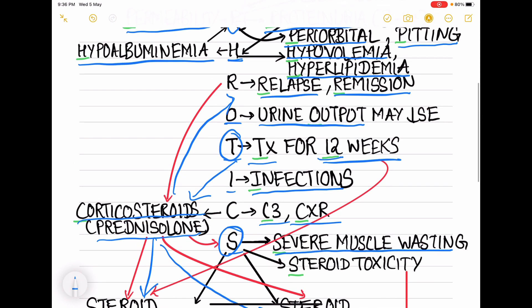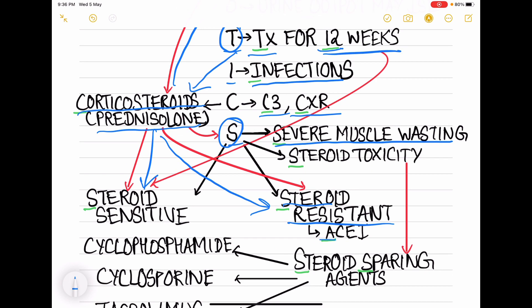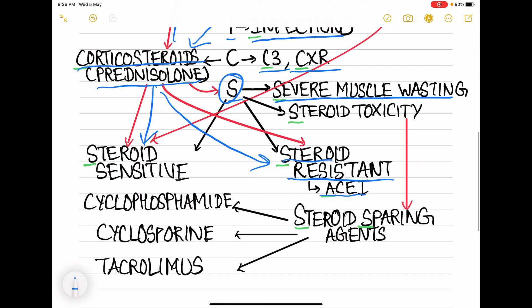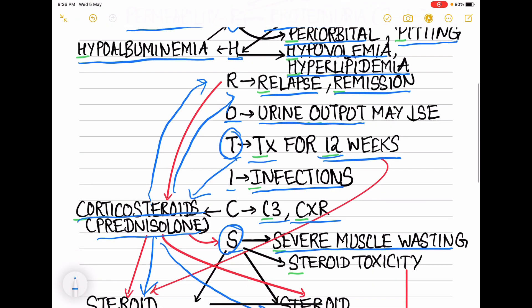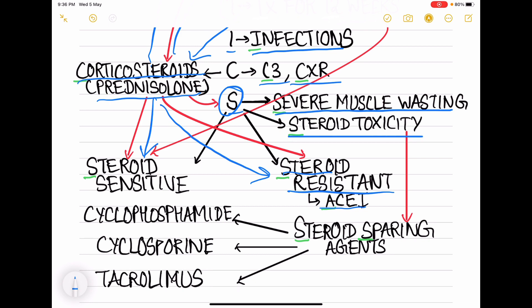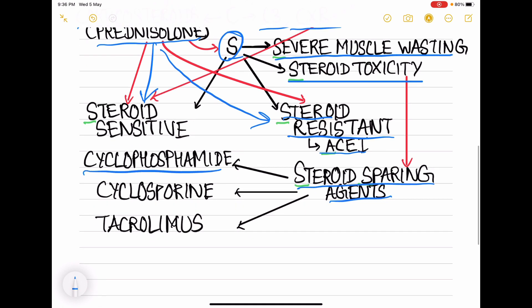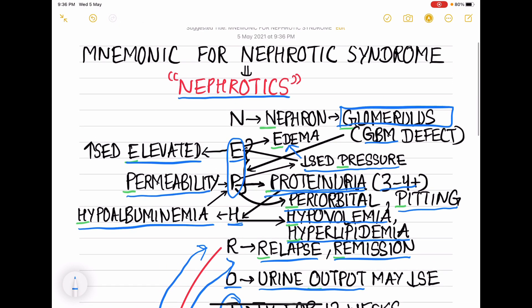In steroid-sensitive nephrotic syndrome we use corticosteroids for 12 weeks. In steroid-resistant nephrotic syndrome we use corticosteroids plus ACE inhibitors. In case of relapse we use again corticosteroids, plus since we are giving corticosteroids for a long period of time it can lead to steroid toxicity, so we can also use steroid-sparing agents - that is cyclophosphamide, cyclosporine, and tacrolimus.